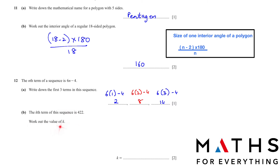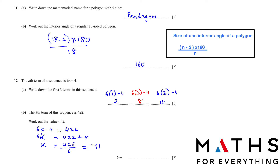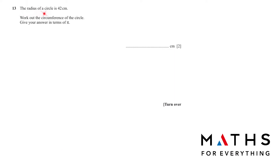In part b, the k-th term of this sequence is 422. Work out the value of k. In place of n we write k and make the equation equal to 422. The negative 4, when shifted to the other side, becomes positive 4, so k equals 426 divided by 6. Put it in the calculator and you get k equals 71.